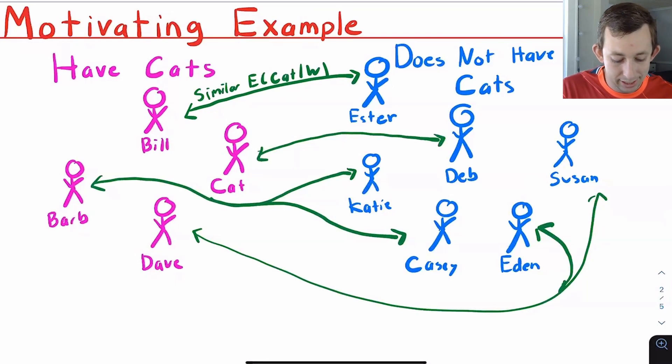We're going to do the same thing. So Cat and Deb, again, maybe they have a similar propensity to be treated or a similar propensity score, a similar guess as to the likelihood of them having a cat given their observable characteristics.